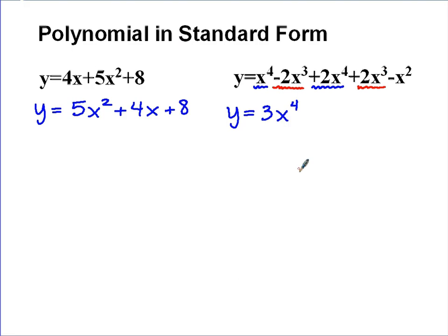So I've now got zero x to the third, which I don't have to write. And then the last thing is I've got that here. There's no other term like it, so I can just copy it down, minus x squared.